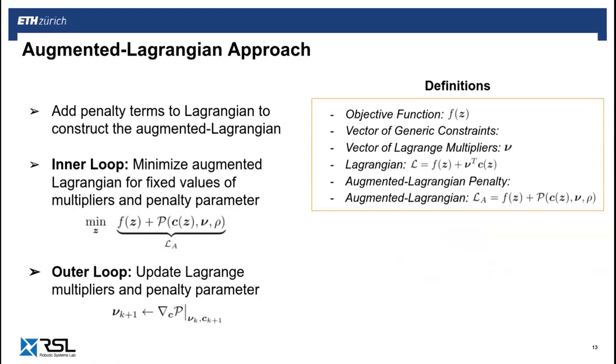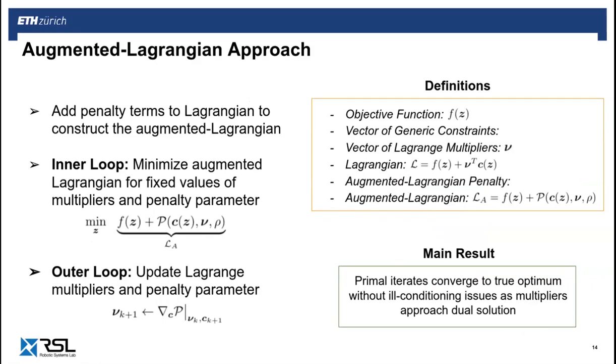Briefly, the algorithm consists of an inner loop that minimizes the augmented Lagrangian for fixed values of nu and rho, followed by an outer loop that adapts the Lagrangian multipliers with an appropriate update rule. These updates aim to drive the multipliers to the dual solution of the problem. The key thing to note here is that as nu approaches its optimum, the minimizer in the inner loop approaches the primal solution of the original problem. And this actually happens for finite values of the penalty parameter, which implies that convergence can be attained without any numerical issues.